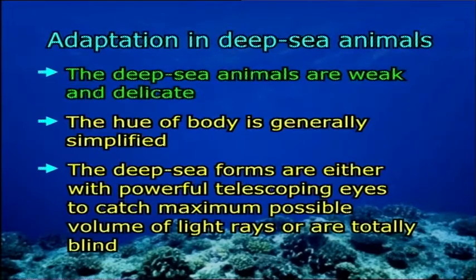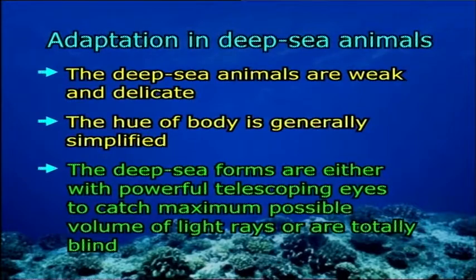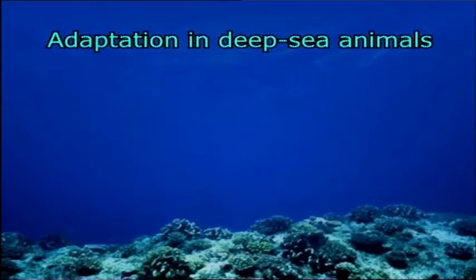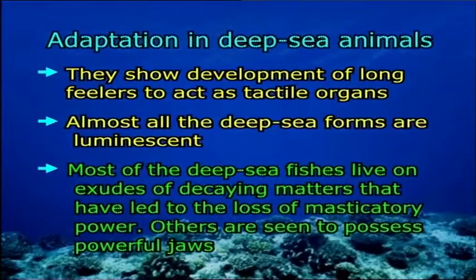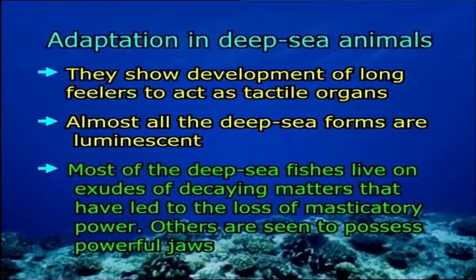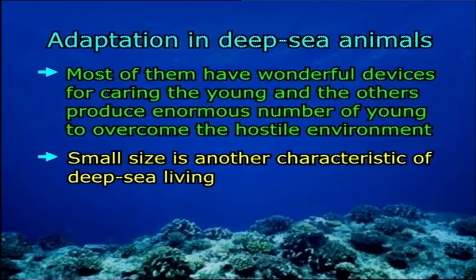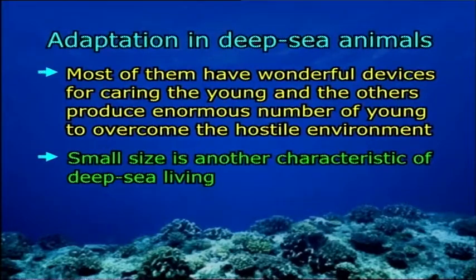Deep sea forms are either with powerful telescoping eyes to catch the maximum possible volume of light rays, or are totally blind. They show development of long feelers to act as tactile organs. Almost all deep sea forms are luminescent. Most deep sea fishes live on exudes of decaying matter, leading to loss of masticatory power, while others possess powerful jaws. Most of them have wonderful devices for caring for young, or produce enormous numbers of young to overcome the hostile environment. Small size is another characteristic of deep sea living.